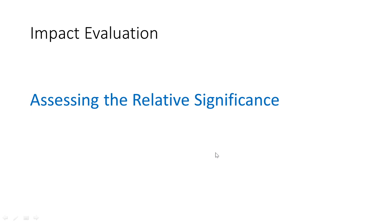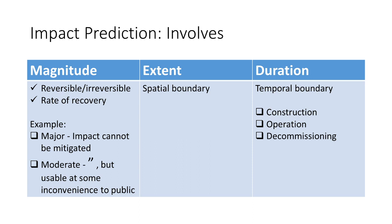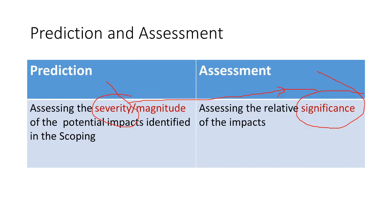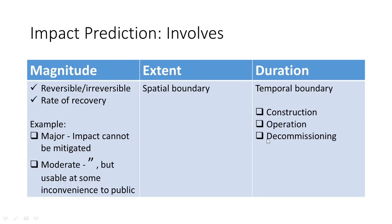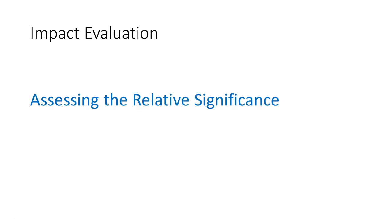Once the prediction is done — which is measurable and measured — you have to assign what is called relative importance, otherwise called significance. You should not be confused by the term significance here, but ultimately we analyze whether the impact is significant or not. So for now, use the term importance: assessing the relative importance of the potential impact identified in the prediction.